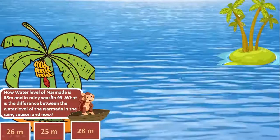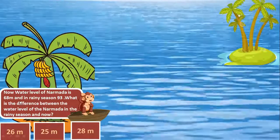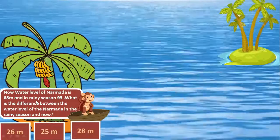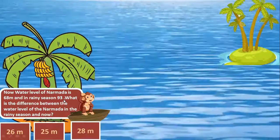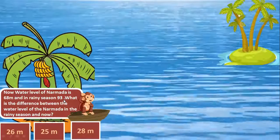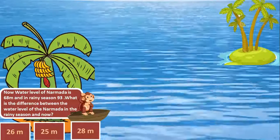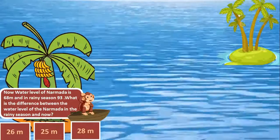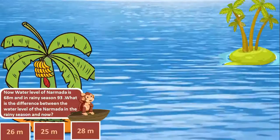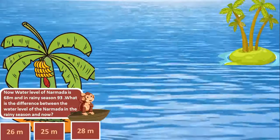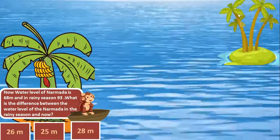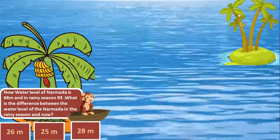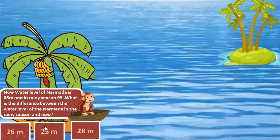Now water level of Narmada is 68 meters and in rainy season it is 93. What is the difference between the water level of Narmada in the rainy season and now? Difference means subtraction. So 93 minus 68 we will get, yes, it is 25.